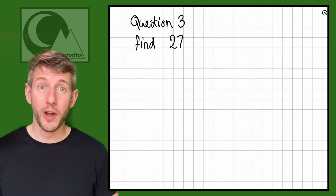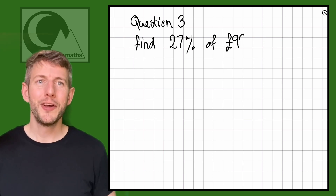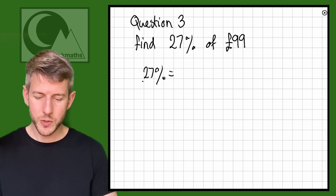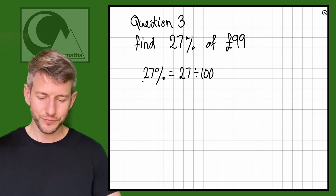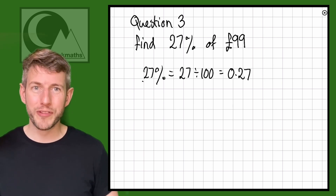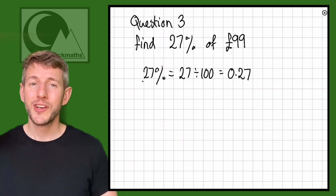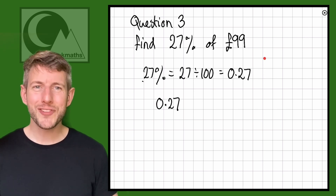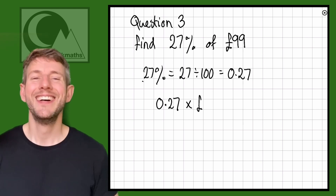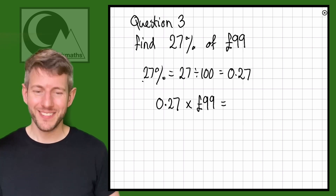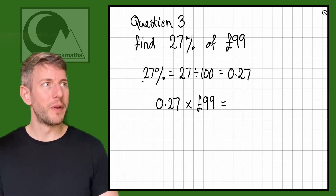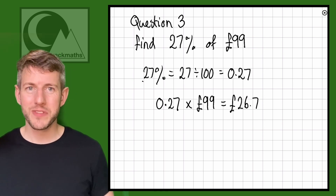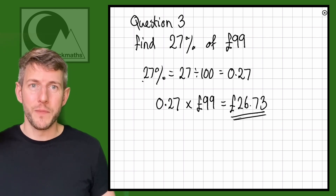Next: 27% of 99. Find your equivalent decimal — that's 27 divided by 100, which equals 0.27. So 0.27 is our equivalent decimal. Now we multiply by our amount: 0.27 × 99 = £26.73, which is what we got last time.